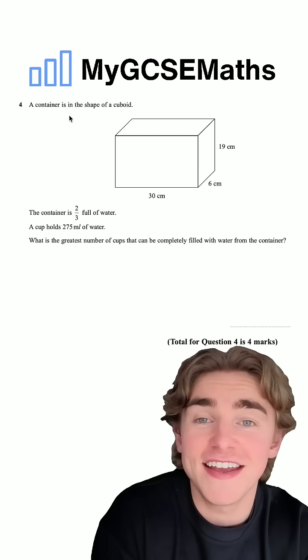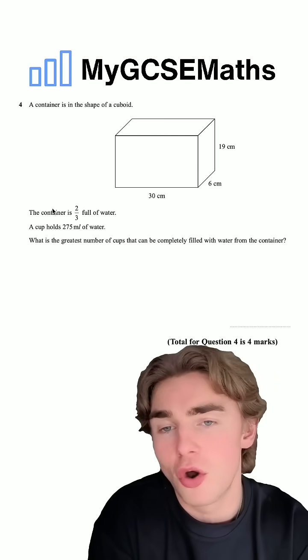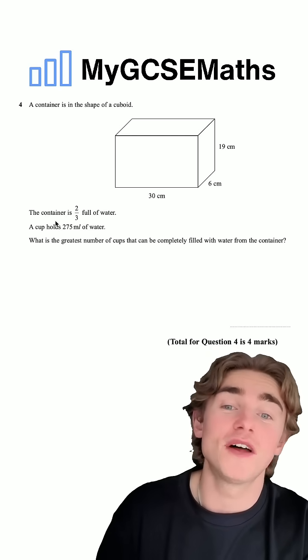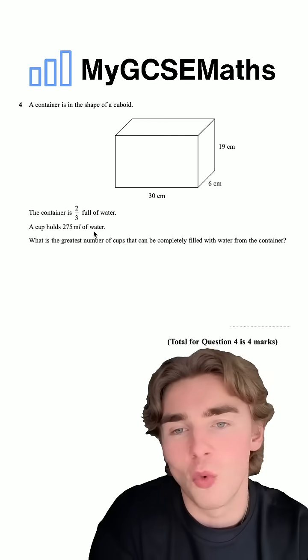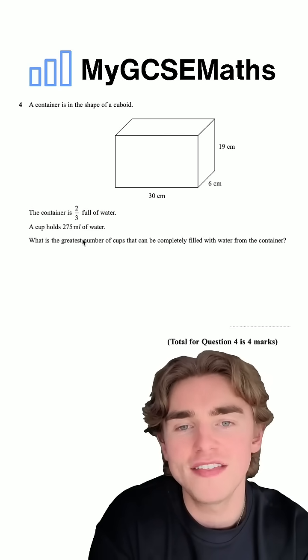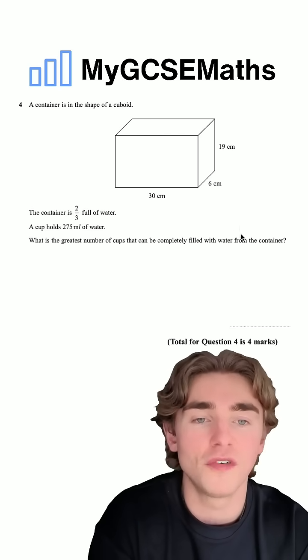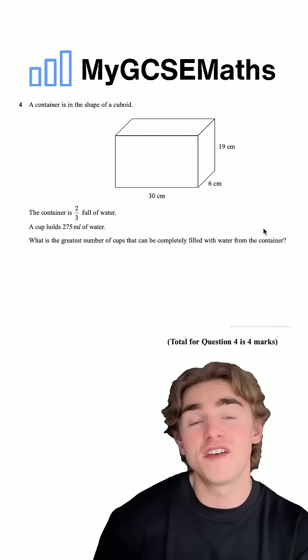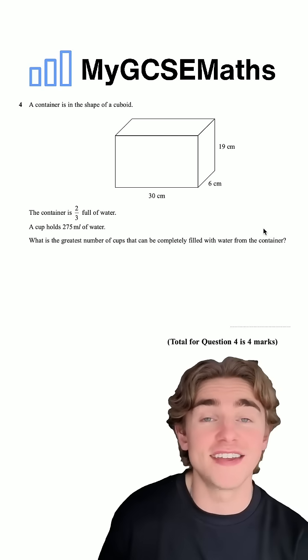The question says a container is in the shape of a cuboid. We're told that the container is two thirds full of water, that a cup holds 275 milliliters of water. And then we're asked what the greatest number of cups that can be completely filled with water from the container is. So we need to work out how many times we can fill that cup with the water in the container.